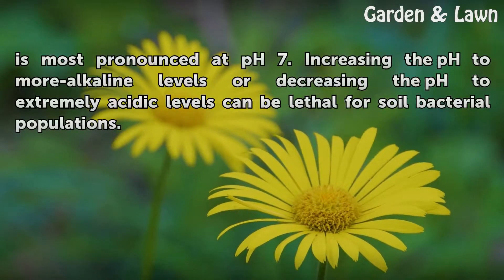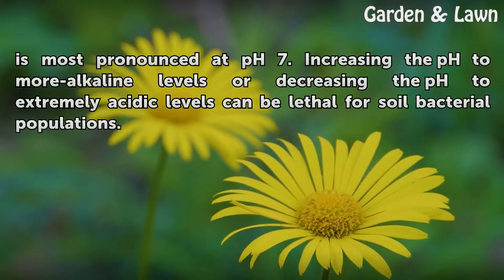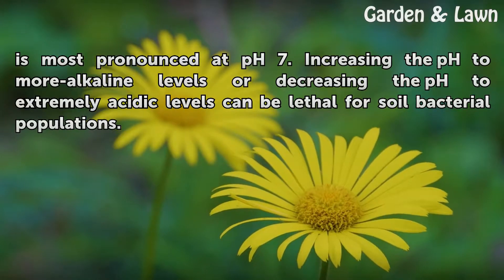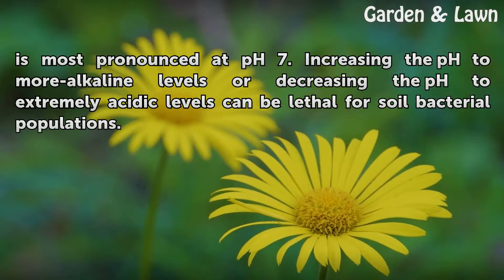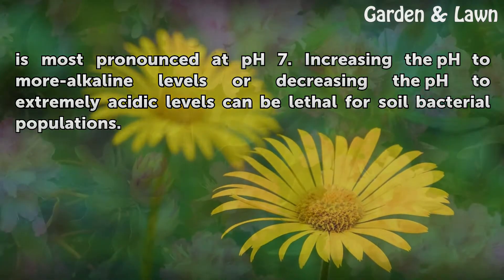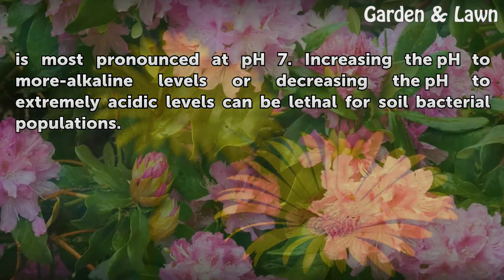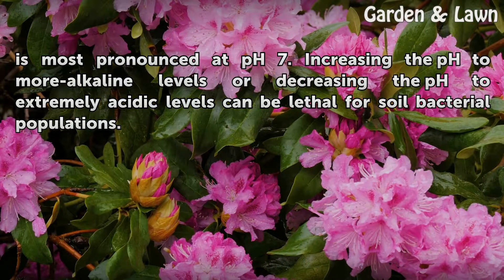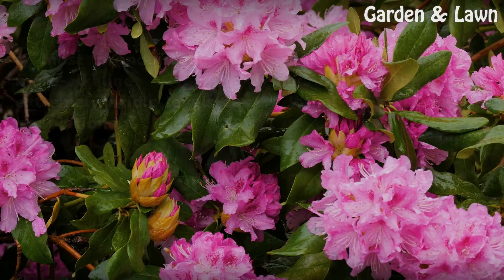Bacterial growth is most pronounced at pH 7. Increasing the pH to more alkaline levels or decreasing the pH to extremely acidic levels can be lethal for soil bacterial populations.